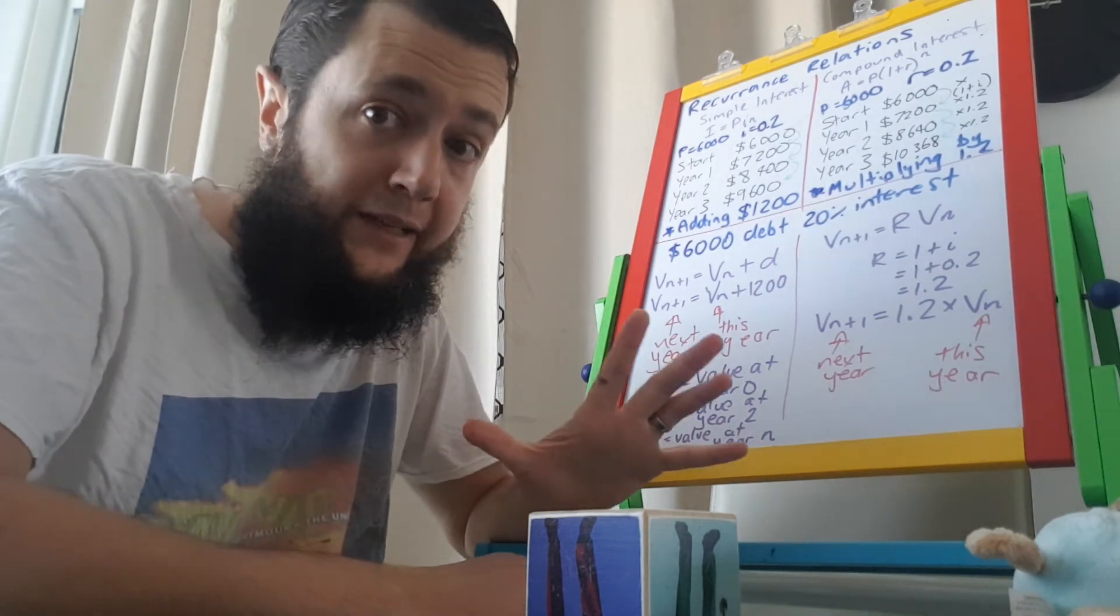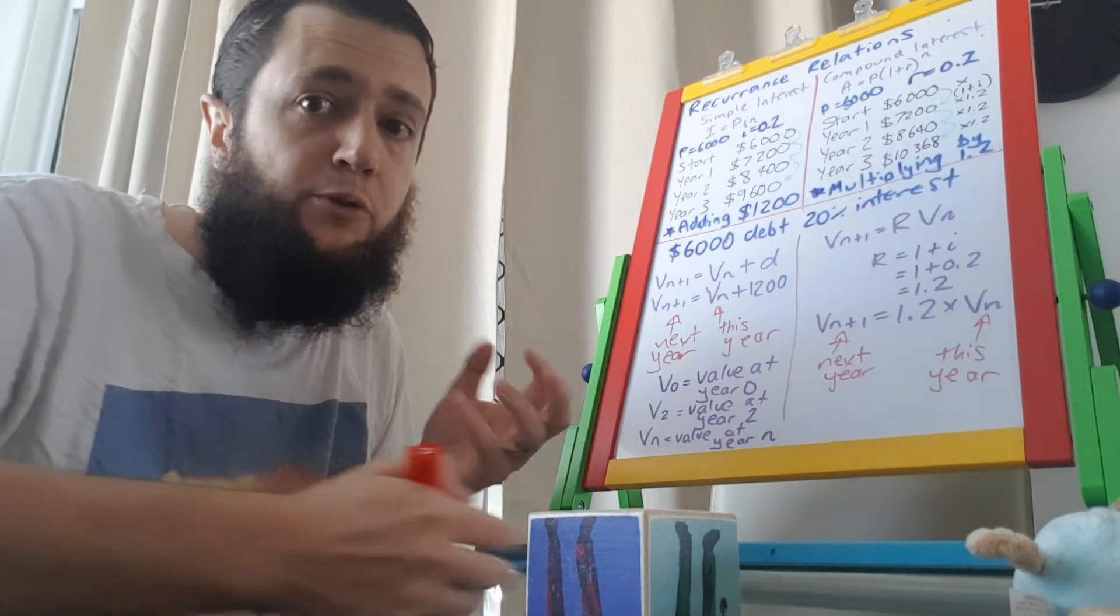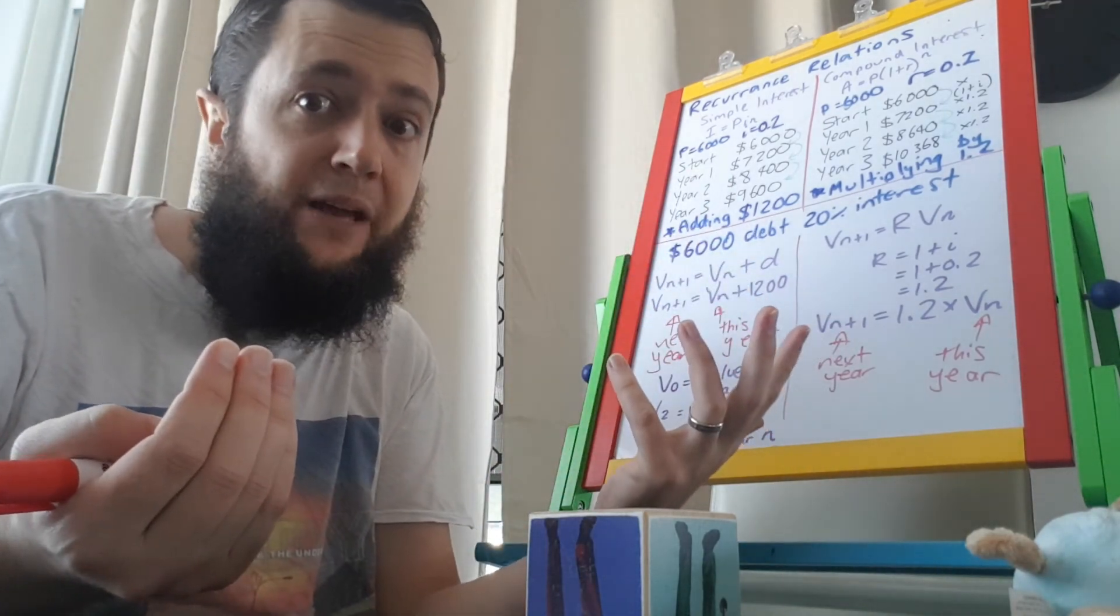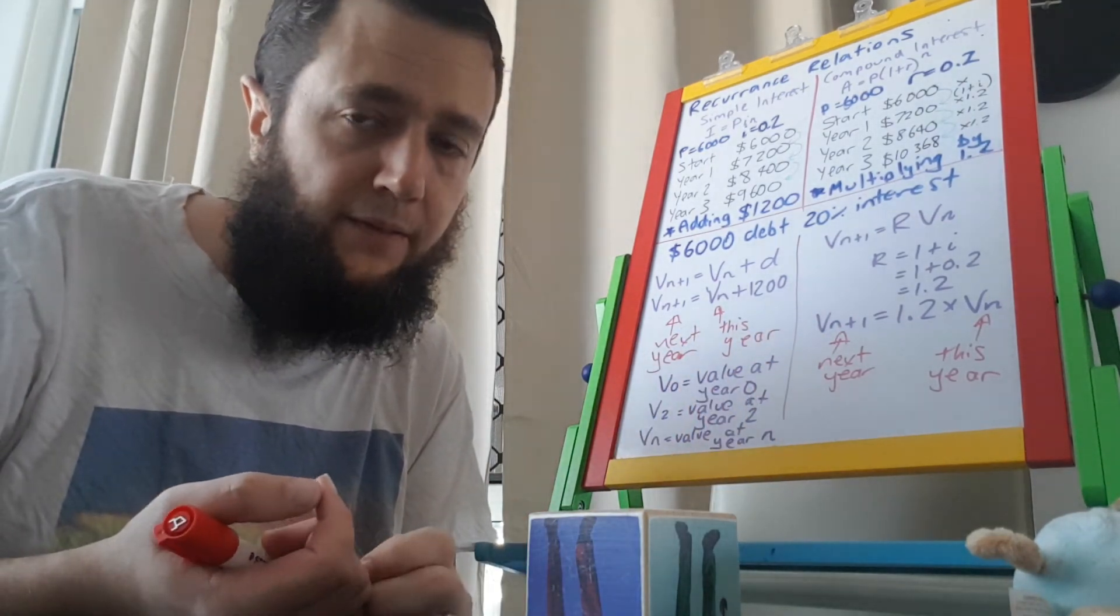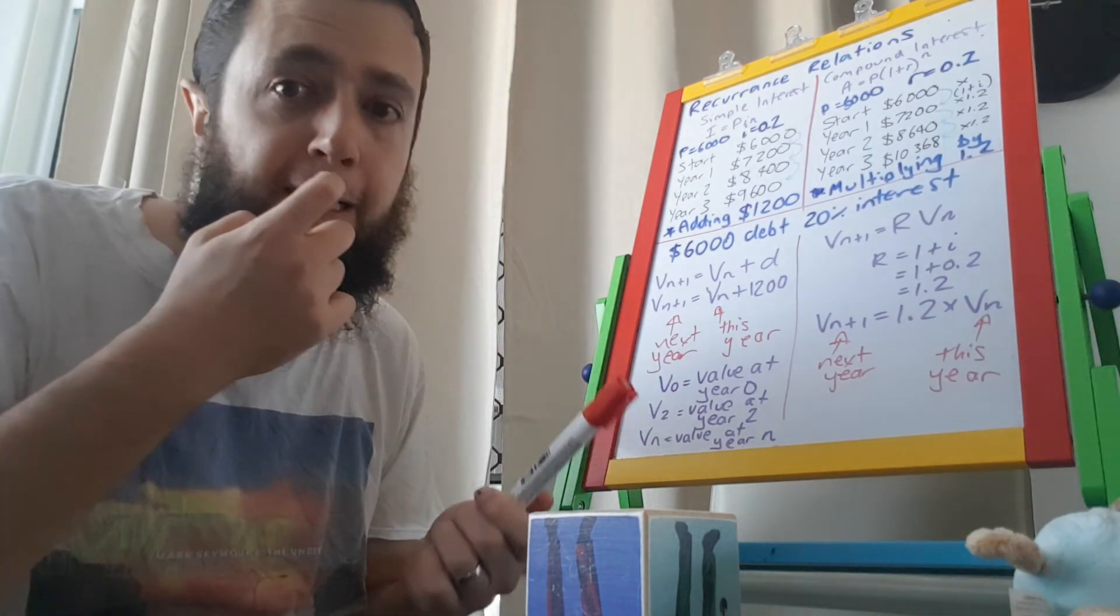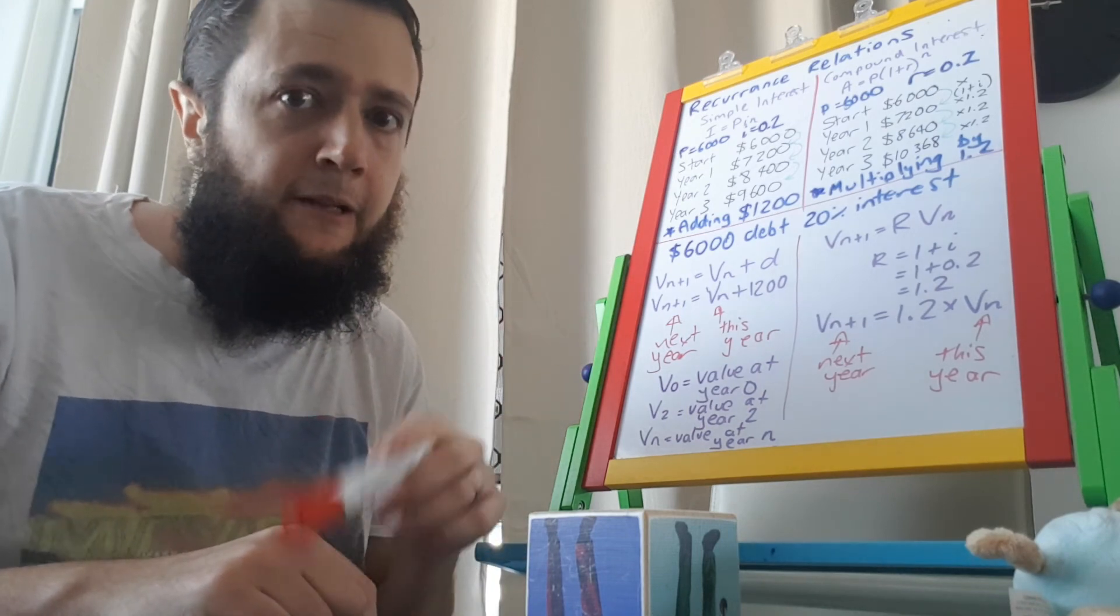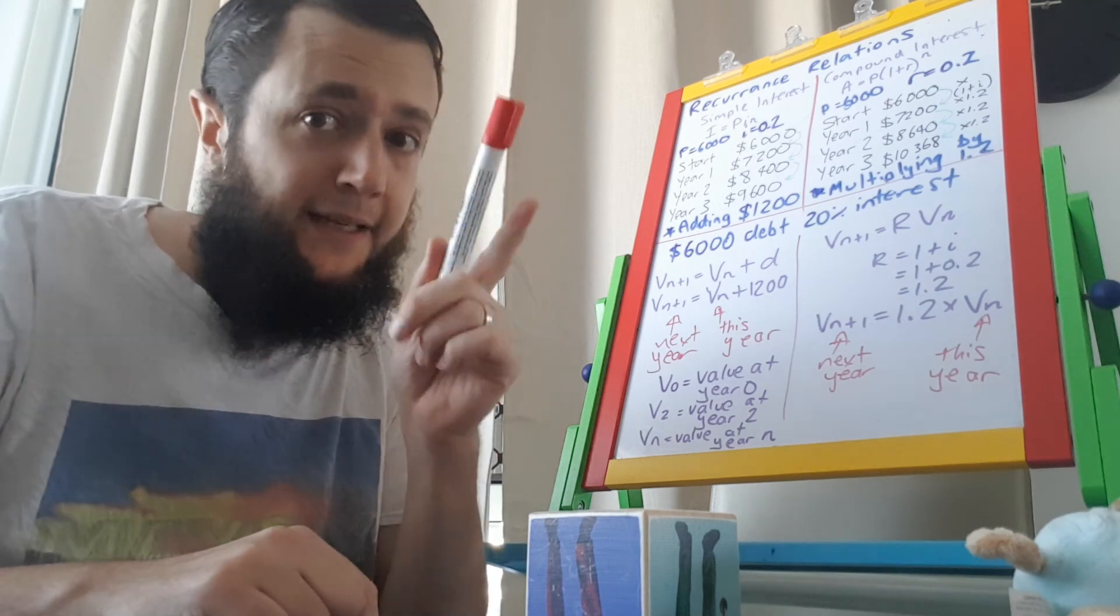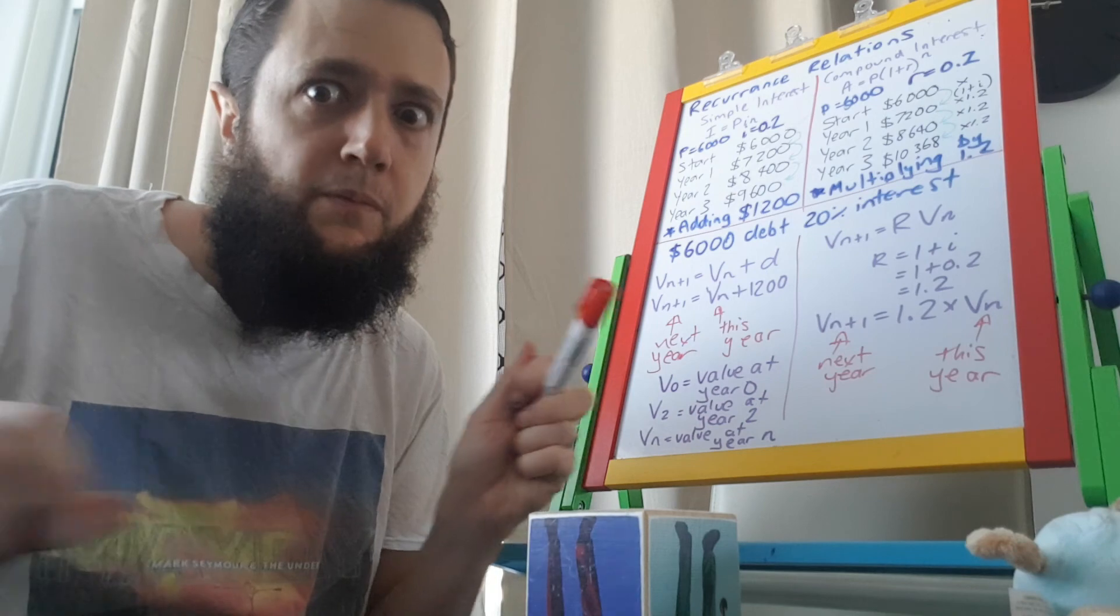Anyway, whole point, recurrence relationships merely show the relationship between the value one year and the next year. For simple interest, that means you add something. For compound interest, that means you multiply something. I hope this makes things a little bit clearer and I am now going to recover from the rampage around my area here. If you have any more questions on this, please make them very specific and email me. You know where I am. Bye!